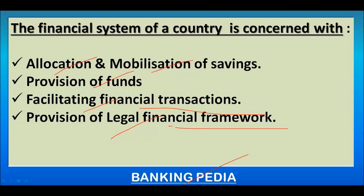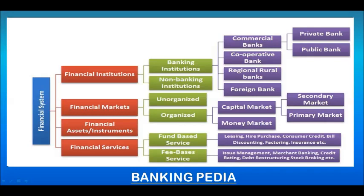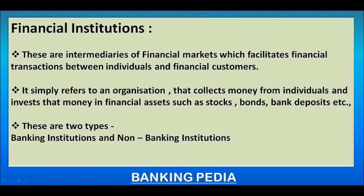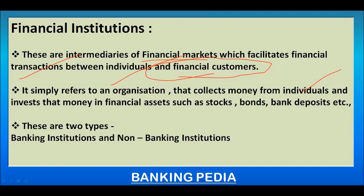This is the aerial view of the Indian financial system. It has four important aspects: financial institutions, financial markets, financial assets or financial instruments, and financial services. Financial institutions are intermediaries of financial markets which facilitate financial transactions between individuals and financial customers.